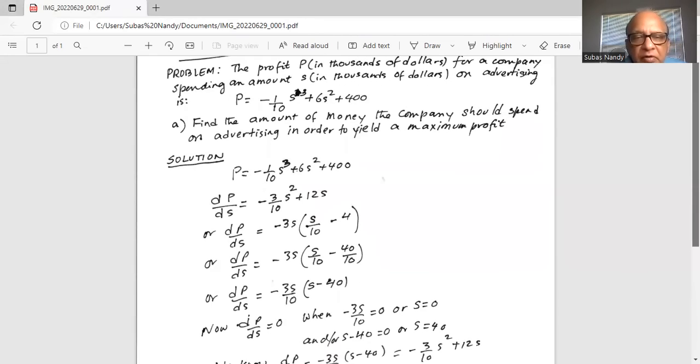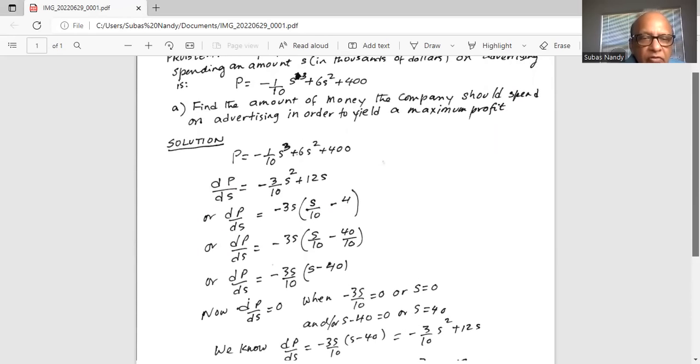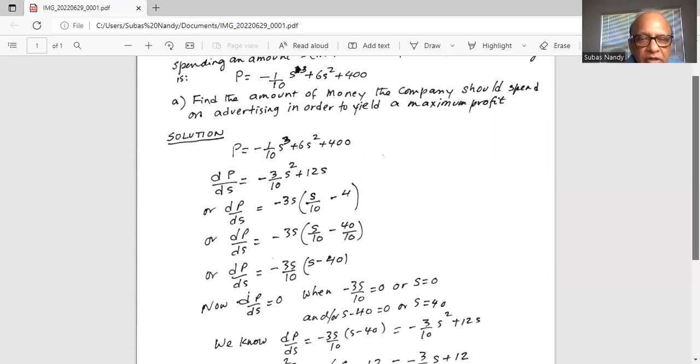So we write the expression for p and then do the derivative. Take the derivative of p with respect to s which is the first term minus 3 over 10 s squared plus the second term 6 times 2, 12s, plus 0 because derivative of a constant is 0.